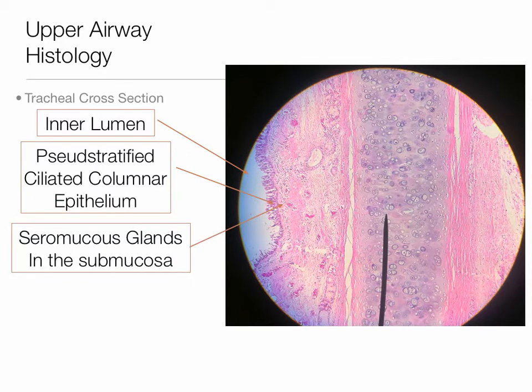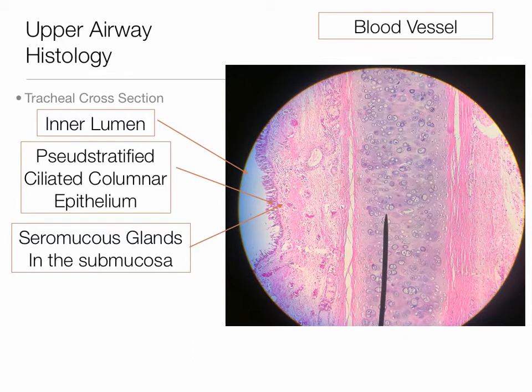Just underneath the pseudostratified ciliated columnar epithelial tissue, we have the seromucous glands in what's known as the submucosal layer — below the mucosal lining or mucosa. These glands are involved in secreting the mucus, which is very complicated with many different components. We know the airways are highly innervated by the parasympathetic nervous system, and it is parasympathetic innervation activation that really causes most of the mucus secretion to occur. Here we also have a large blood vessel — you can see it has different layers, as we would expect.